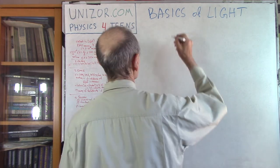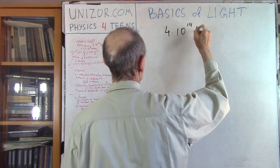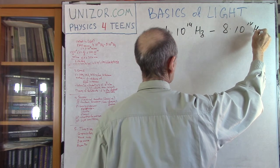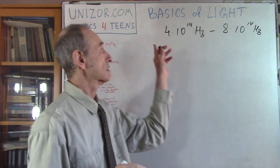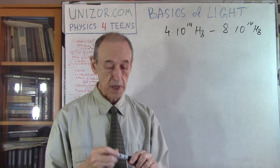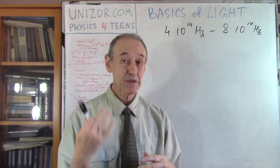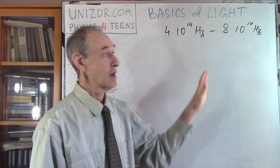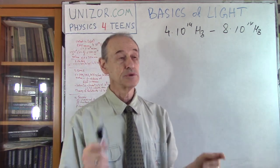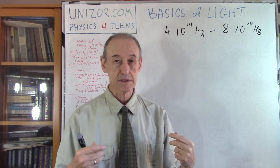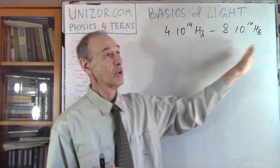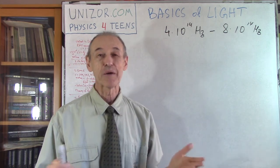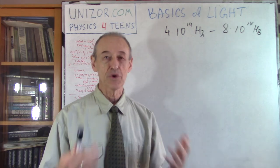We are talking about a certain range of frequencies of electromagnetic waves which we can sense. The frequencies are from 4 times 10 to the 14 hertz to 8 times 10 to the 14 hertz. Electromagnetic waves within this range of frequencies can be sensed by our eyes. Obviously different people sense it differently - this is an approximation, the average minimum and average maximum frequency. Usually children have more sensitivity and might actually see even below and above this range.